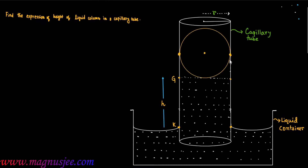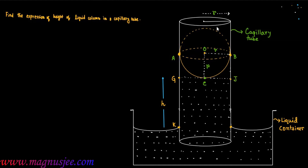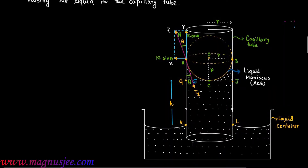We consider a spherical surface or imaginary hemisphere for the liquid meniscus. ACB is the liquid meniscus. O is the center of liquid meniscus ACB, and R is the radius of the free surface of liquid, or liquid meniscus ACB. The liquid exists below this liquid meniscus within the capillary tube.